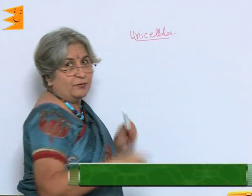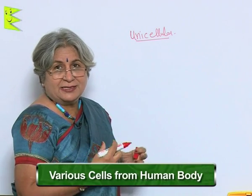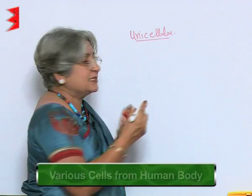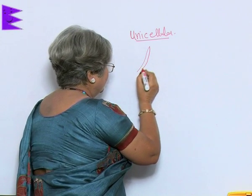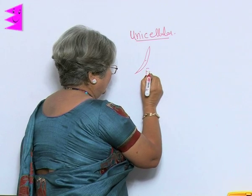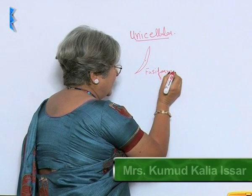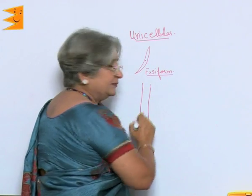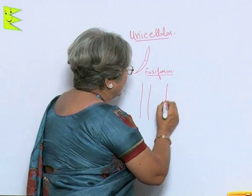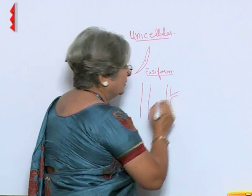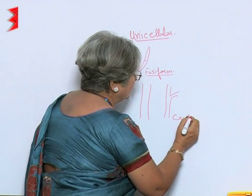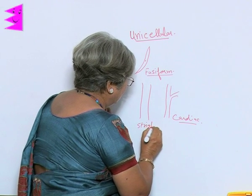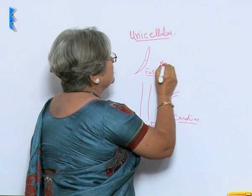If we take the case of the human body only, what do we find? The cells of the smooth muscles, which are in the internal organs, they are fusiform like this. In the case of muscles found on the skeleton, they are long and cylindrical. In the case of the heart, they are branched — this is cardiac. These are striated muscles and these are non-striated.